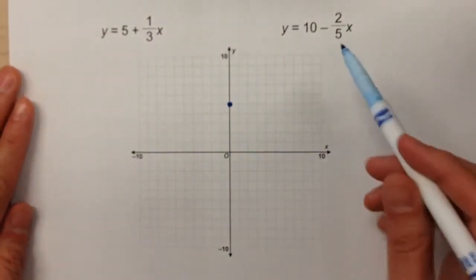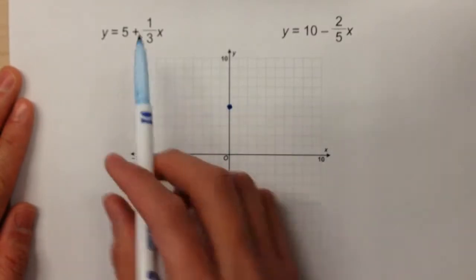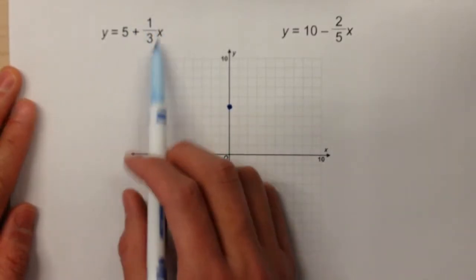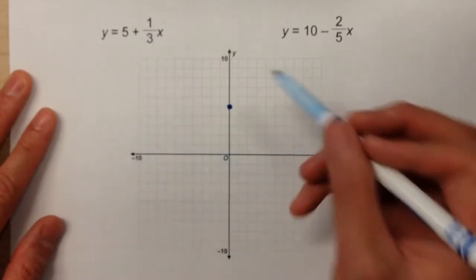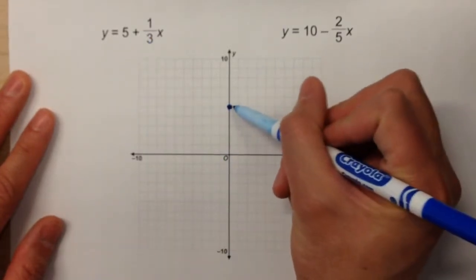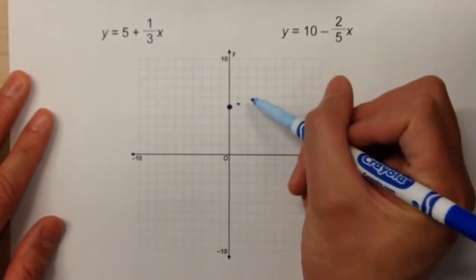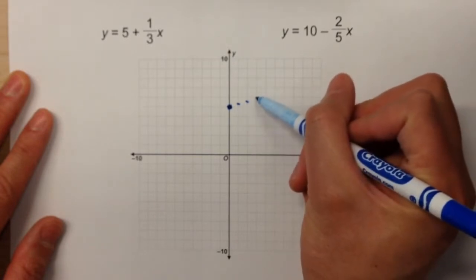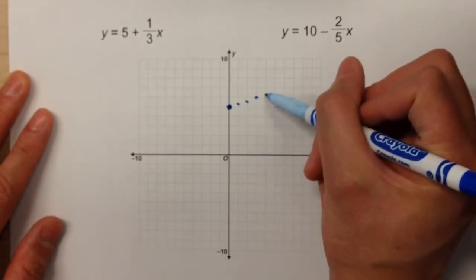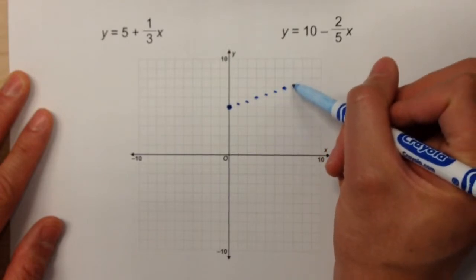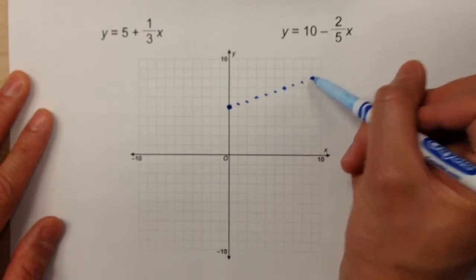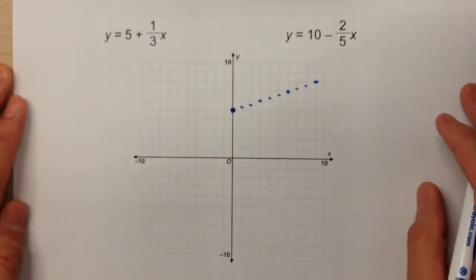Now the second thing we need to do is plot the pattern of the graph. Now our rate, our slope, is positive one-third, which means from here it's gonna go up a third of a square each time we go over. So you can kind of see I'm like one-third, two-thirds, three-thirds, one-third, two-thirds, three-thirds. It's kind of a pain to graph a fraction of a square and you kind of have to estimate.